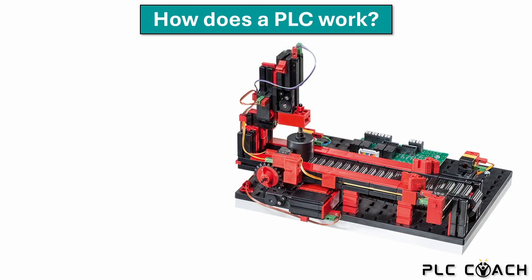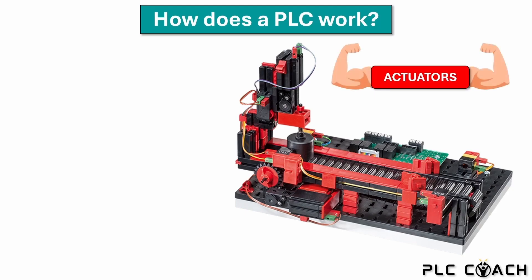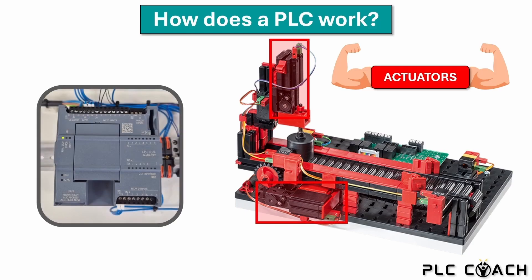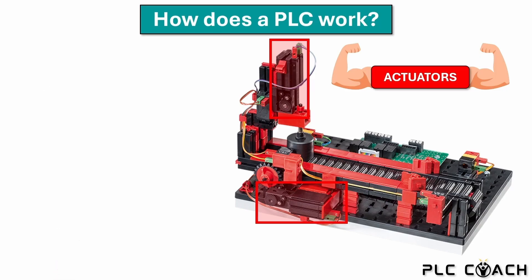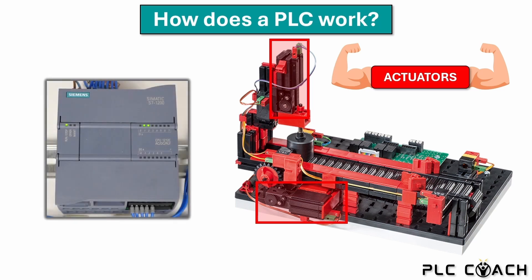Our goal is to control the so-called actuators of the model. Actuators are the muscles of the PLC. This includes the conveyor belt motor as well as the motor of the punching station. The actuators are wired to the outputs of the PLC. You can recognize the status of the outputs by the output LEDs on the lower side of the PLC. When an output is activated, the corresponding LED lights up.